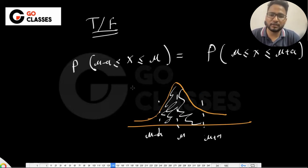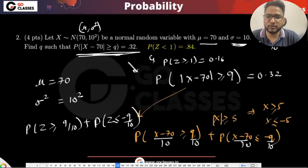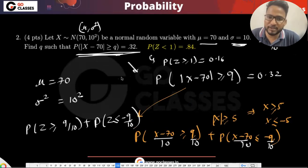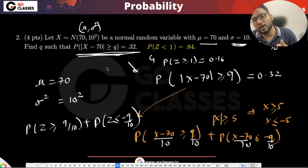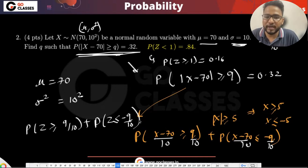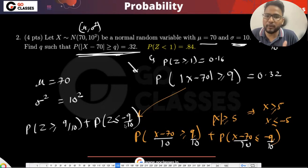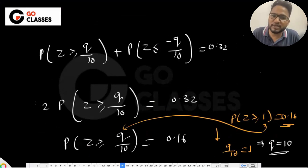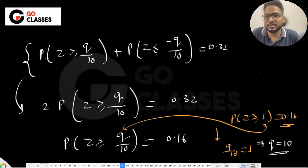The symmetry property is actually important in solving questions. For example, in the previous question they said |X − 70| ≥ b. We converted that to Z form, and realized that this gave Z ≥ a and Z ≤ −a. Since it is symmetric about zero, those two probabilities are the same — that is why we multiplied by two to get the final answer.